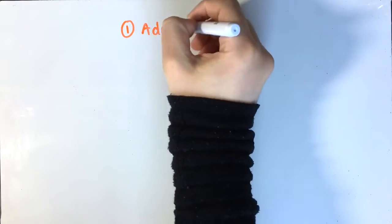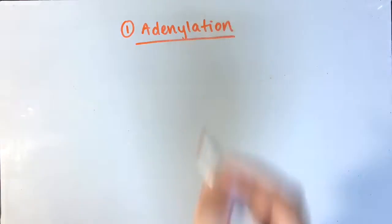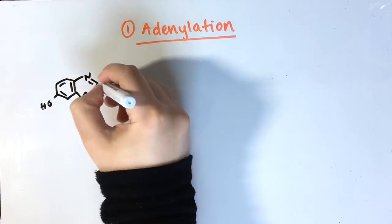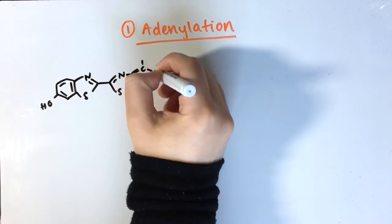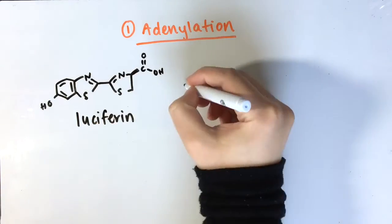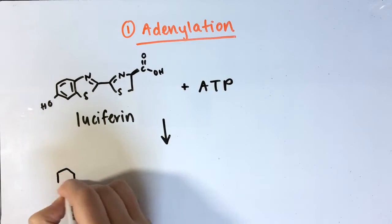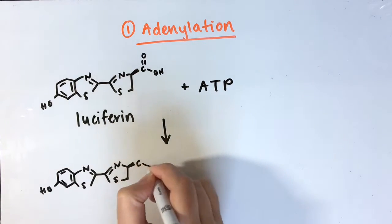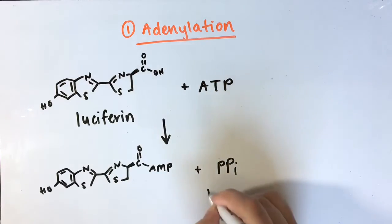Although the exact mechanism is not known, the generally accepted mechanism is as follows. Luciferase first binds luciferin and ATP. Magnesium is needed to shield the negative charges on ATP. Luciferin acts as a nucleophile and attacks ATP to form a luciferol adenylate still bound to the enzyme. Pyrophosphate is released.